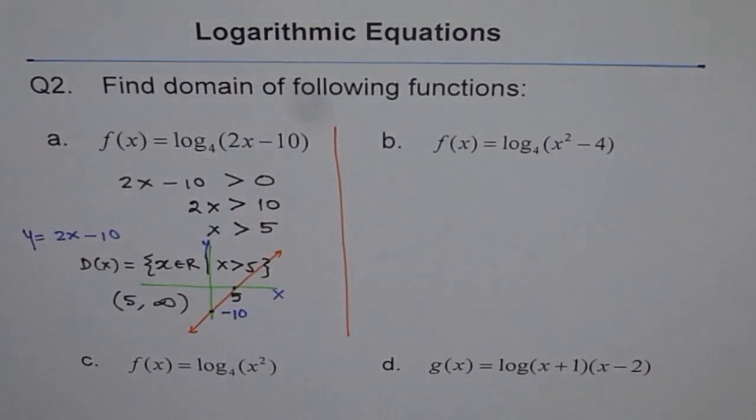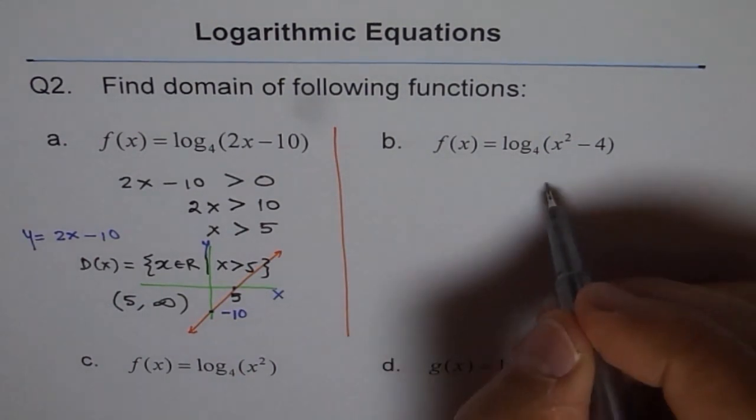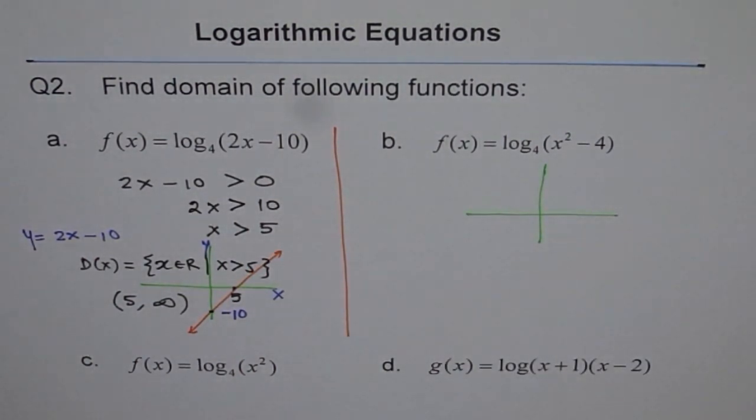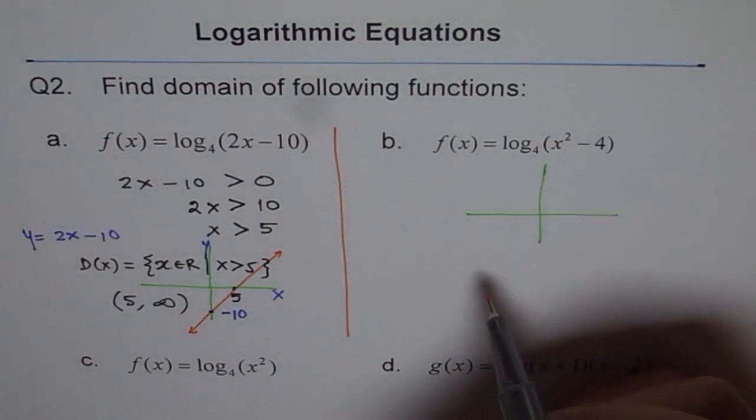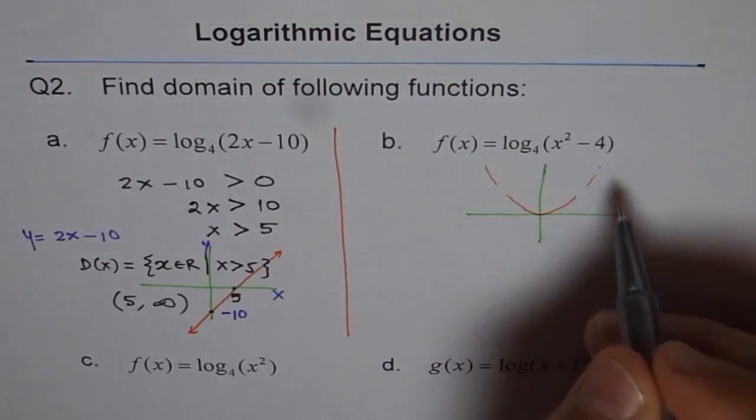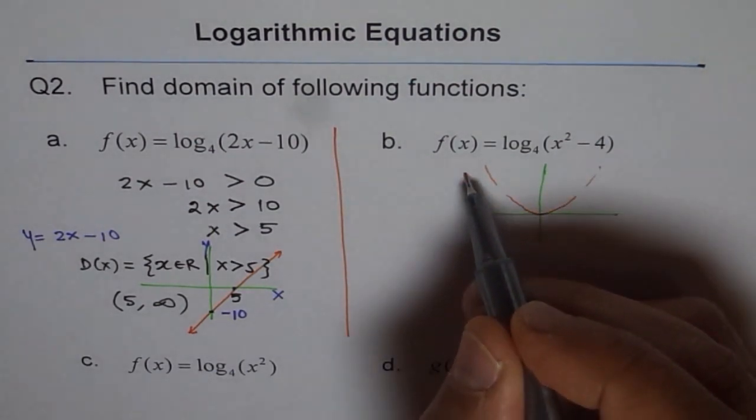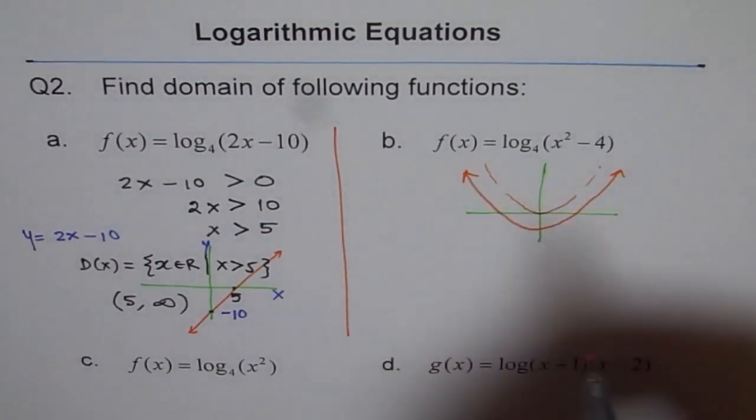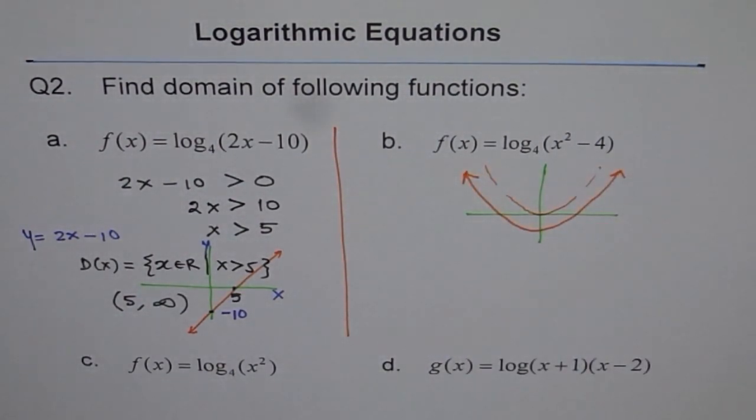Now let's try to do part B. Here I'll sketch this. It is easier and better. x² - 4. x² is a parabola like this. -4 means moving it 4 units down. So let's move it 4 units down and draw x² - 4. This is x² - 4.